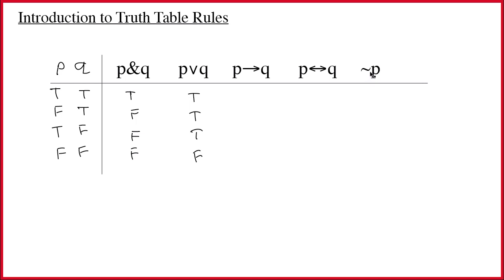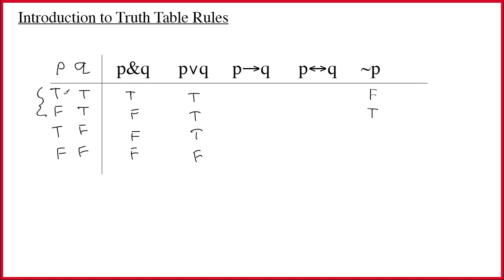The tilde is only applying to a single value at a time — all the rest of our connectives are combining values, but the tilde applies to a single element. We only need to think about two cases: when P is true, the value of tilde P is obviously false. But if P is false, then tilde P will be true. The tilde just reverses the truth value. Under tilde P we'll have false, true, false, true — we're reversing the entire column.